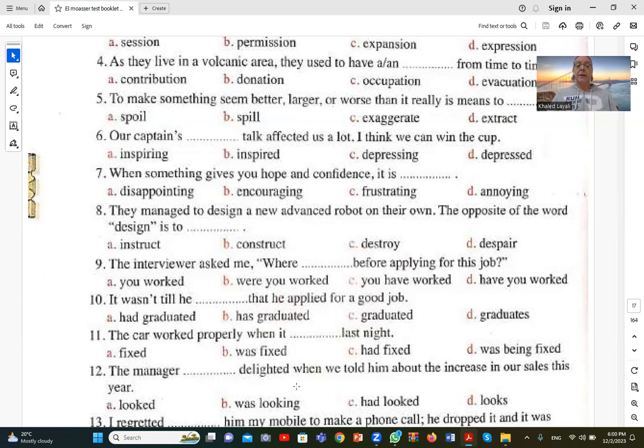Number eleven. Will the car work properly when it was fixed last night. The car was fixed البيئة passive. السيارة مش هتصلح نفسها, someone else has to fix it. Was fixed for past tense, was plus past participle. Was fixed B is correct.